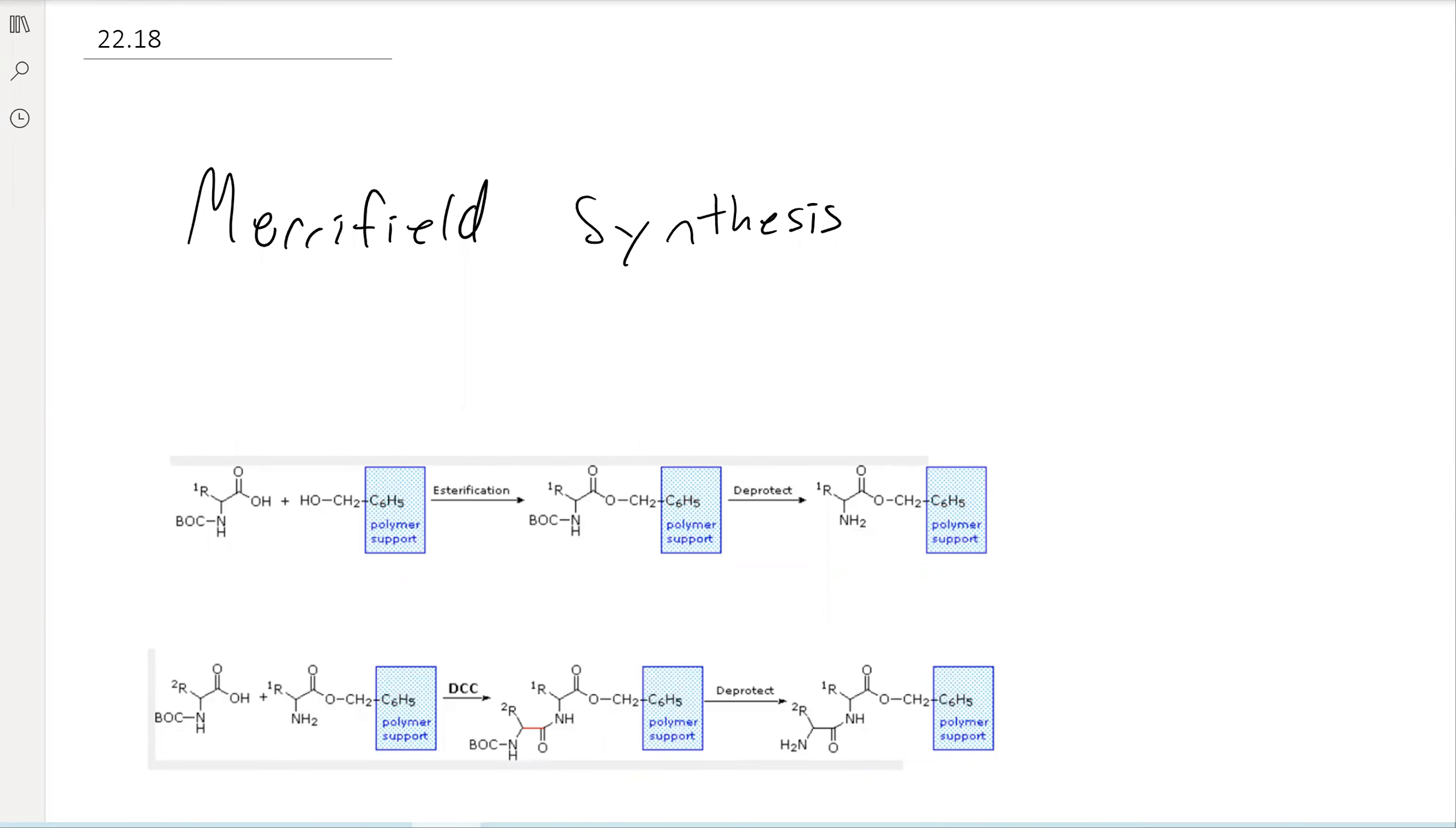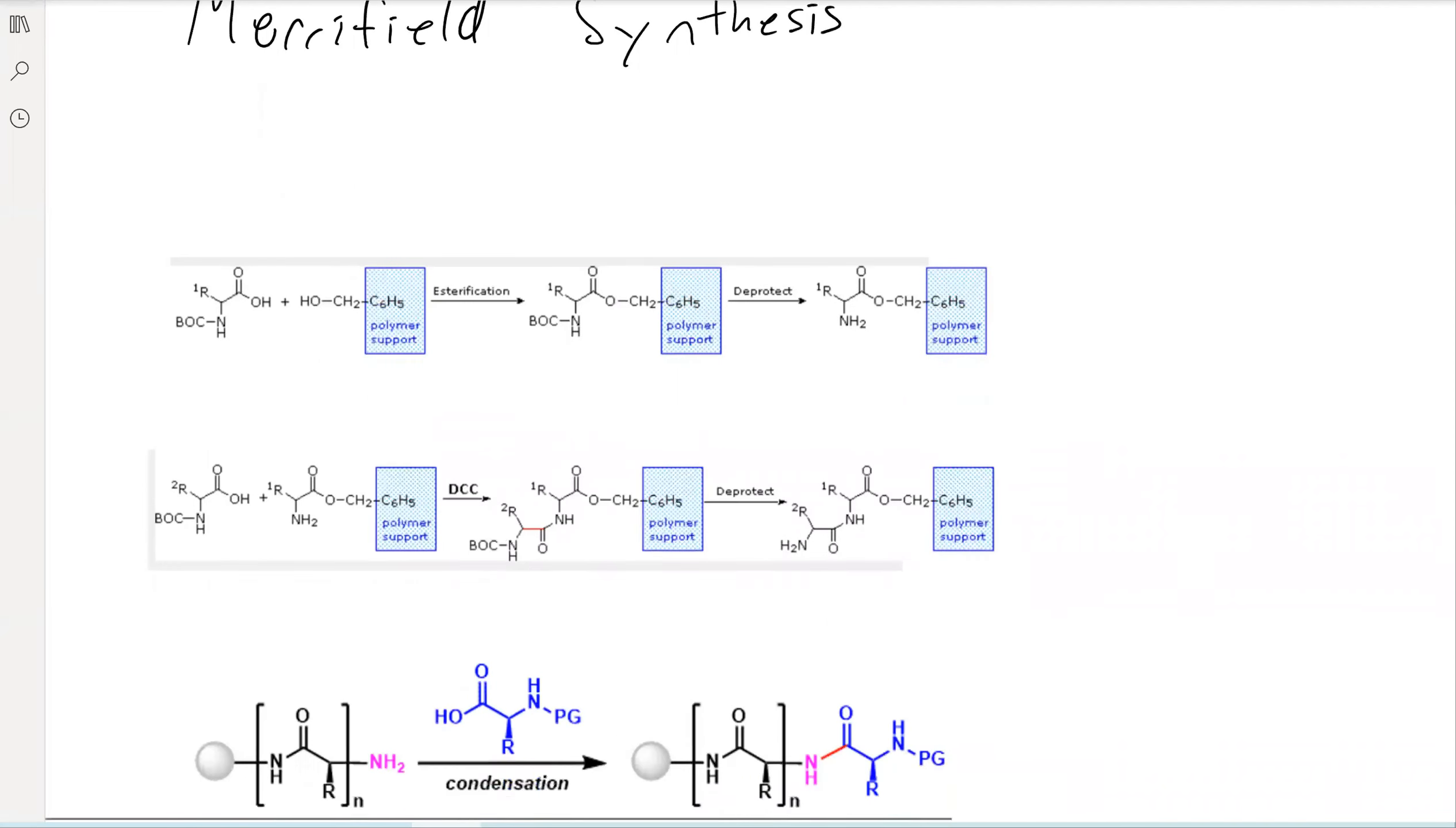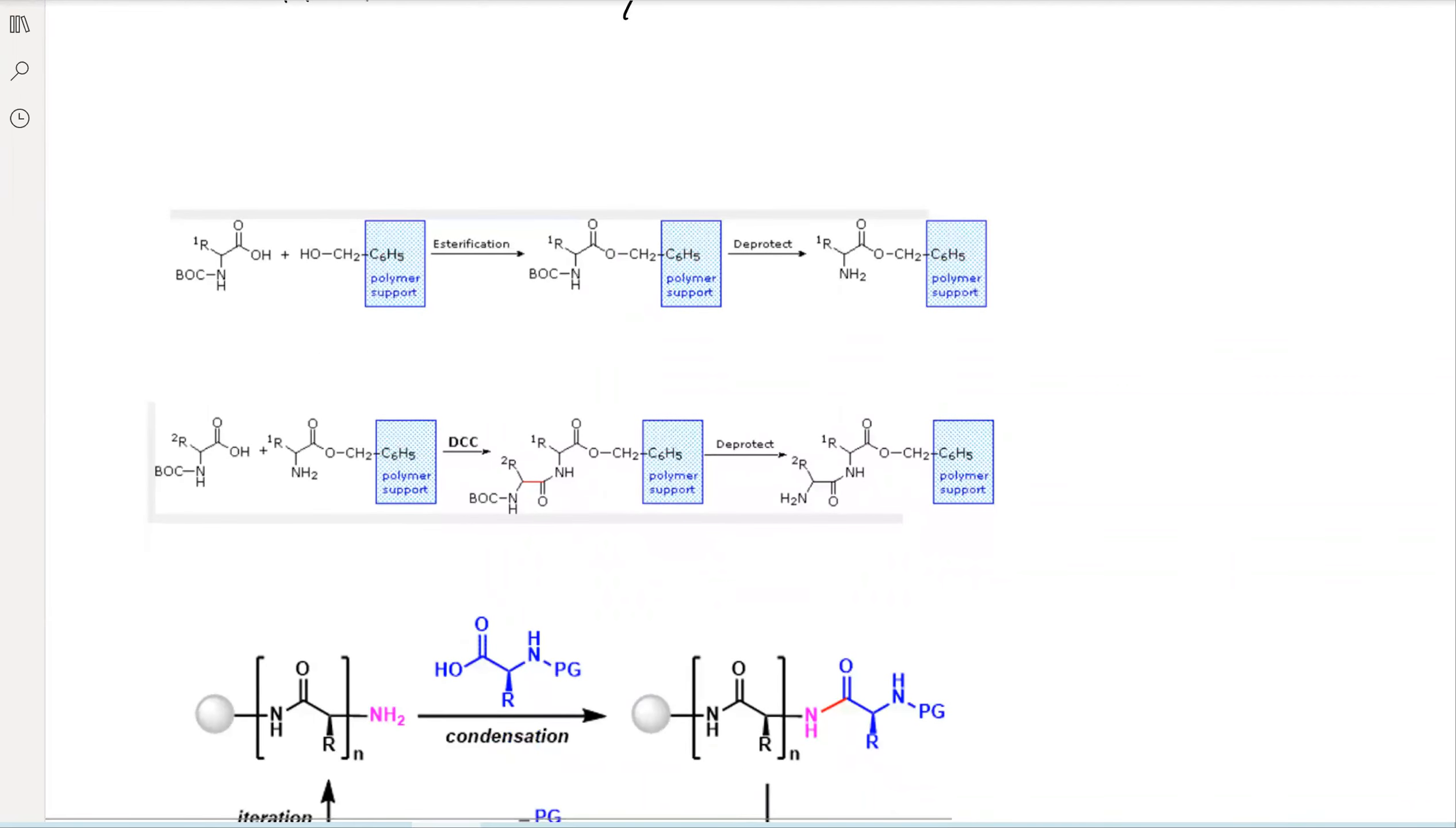All right. So a more useful iteration of this is the Merrifield synthesis. The main thing that this does is it uses some kind of polymer support. That's what's indicated right here. And the main thing about this polymer support is that it's insoluble.